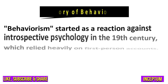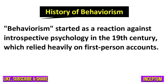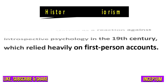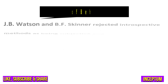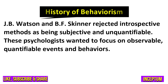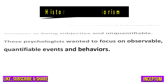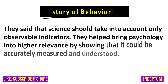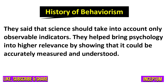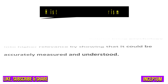History of Behaviorism: Behaviorism started as a reaction against introspective psychology in the 19th century, which relied heavily on first-person accounts. J.B. Watson and B.F. Skinner rejected introspective methods as being subjective and unquantifiable. These psychologists wanted to focus on observable, quantifiable events and behaviors, saying that science should take into account only observable indicators. They helped bring psychology into higher relevance by showing that it could be accurately measured and understood, and wasn't just based on opinions.